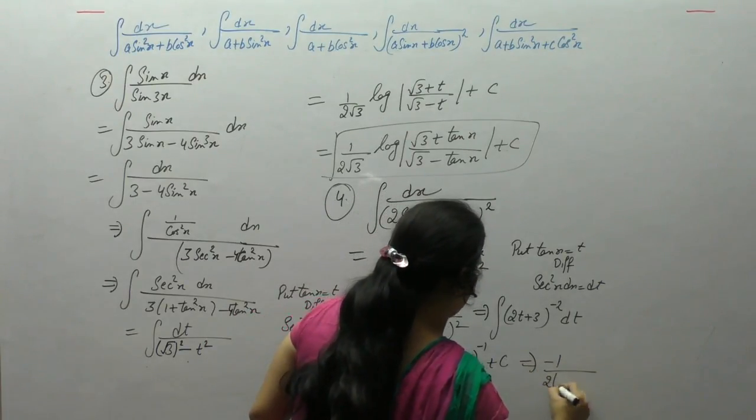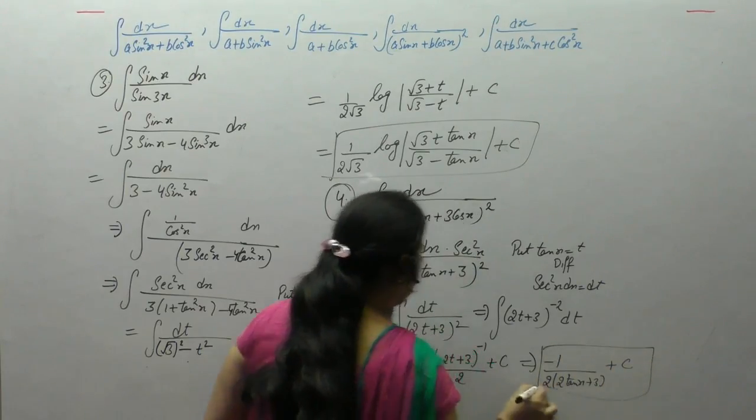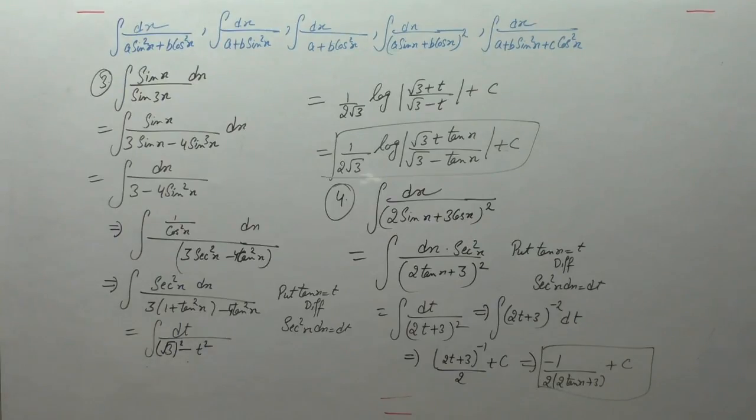Minus 1 upon 2, 2 tan x plus 3 plus c, minus 1 upon 2 into 2 tan x plus 3.